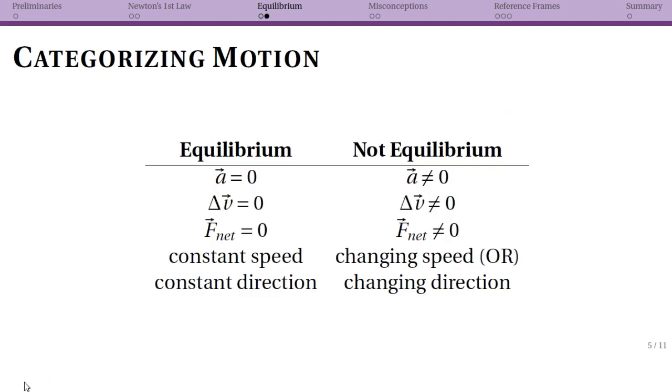So to summarize all on one slide, when you have equilibrium that means that your acceleration is equal to zero, which is by definition the same thing as saying that your change in velocity, Δv, is equal to zero, and we know that our net force must be equal to zero. So for all of this to be true we also have a constant speed and constant direction.